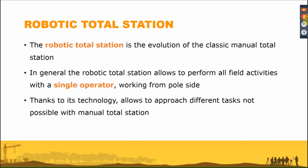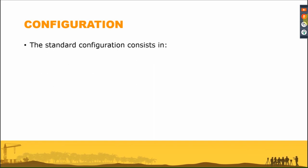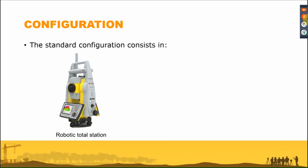Regarding the standard configuration: we have the total station — our model, the Zoom 90. You can see the antenna over the robotic total station, used for communication. In GeoMax, we use the passive prism, so the communication we use is long-range Bluetooth, used only to communicate with the field controller, not with the prism. With a standard controller, the range is about 250 to 300 meters, but with a special controller it's also possible to reach 700 to 800 meters.